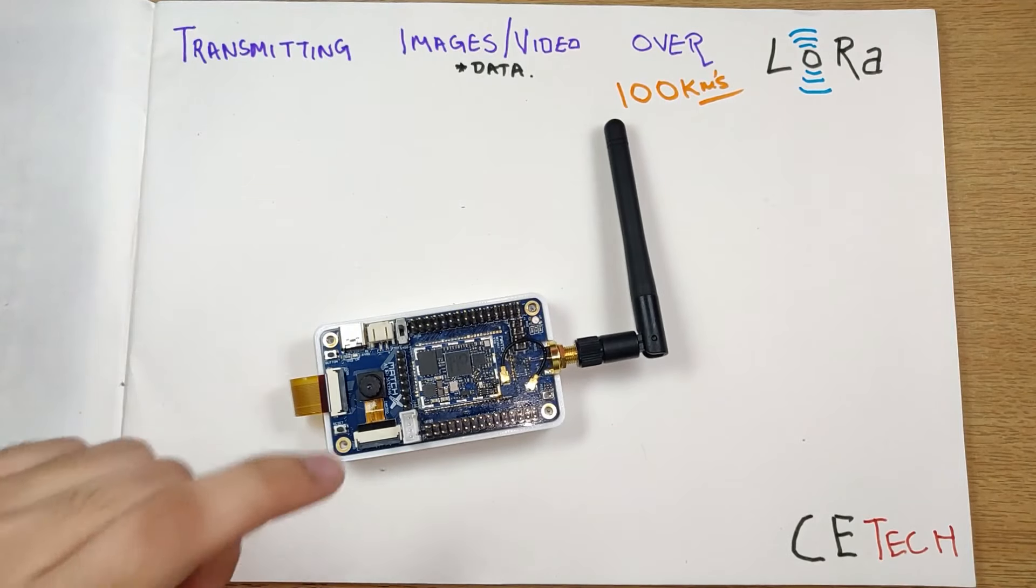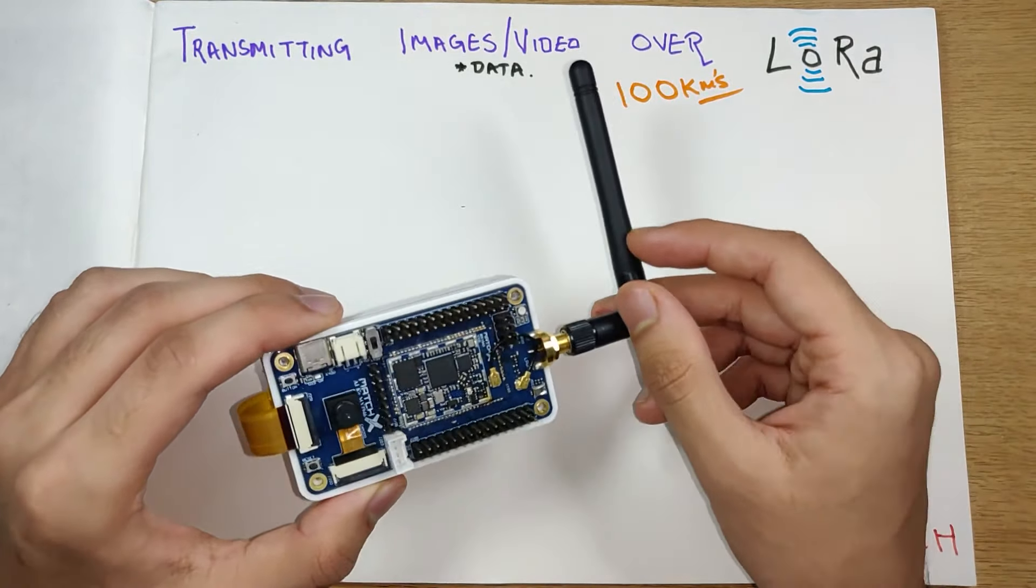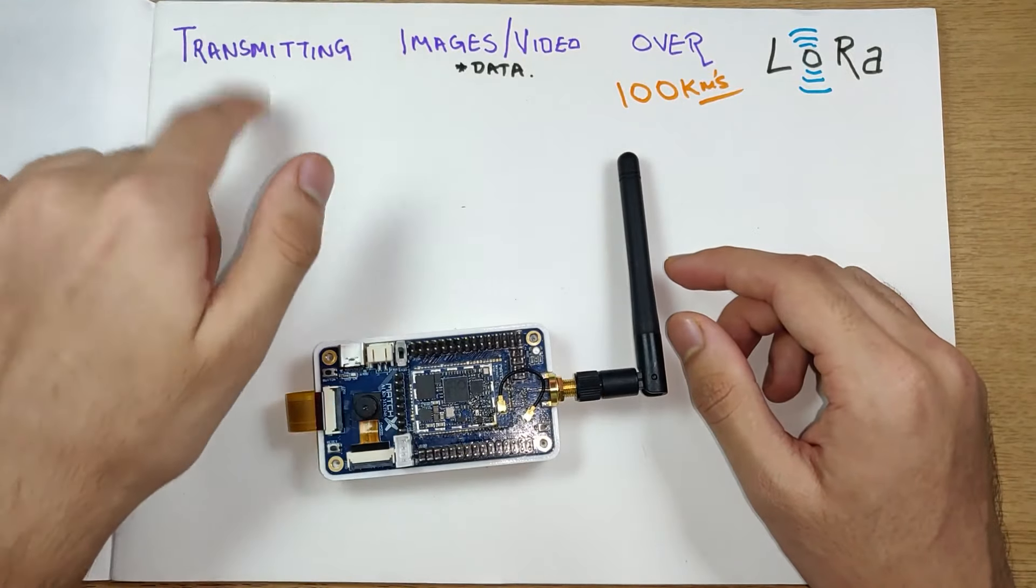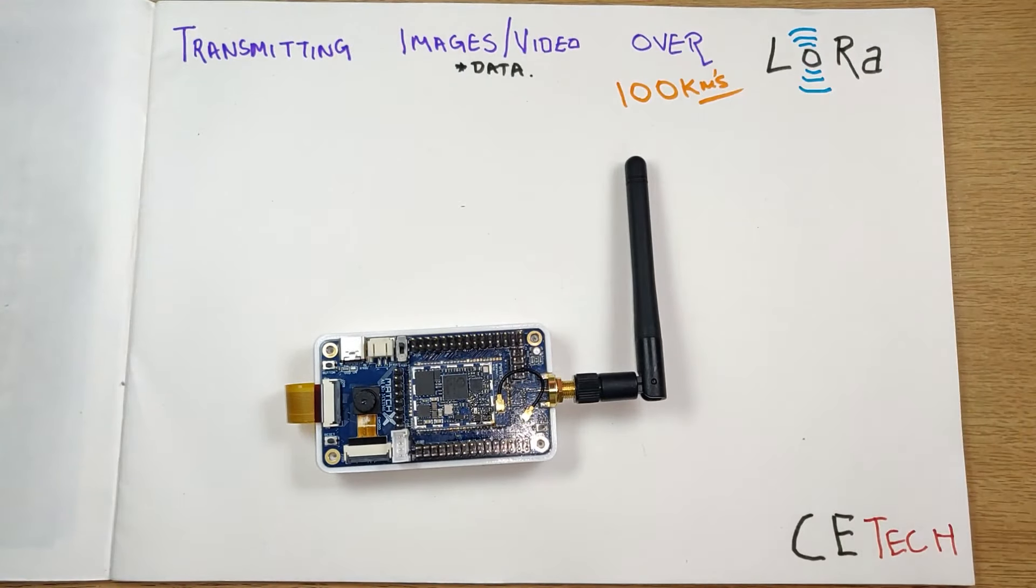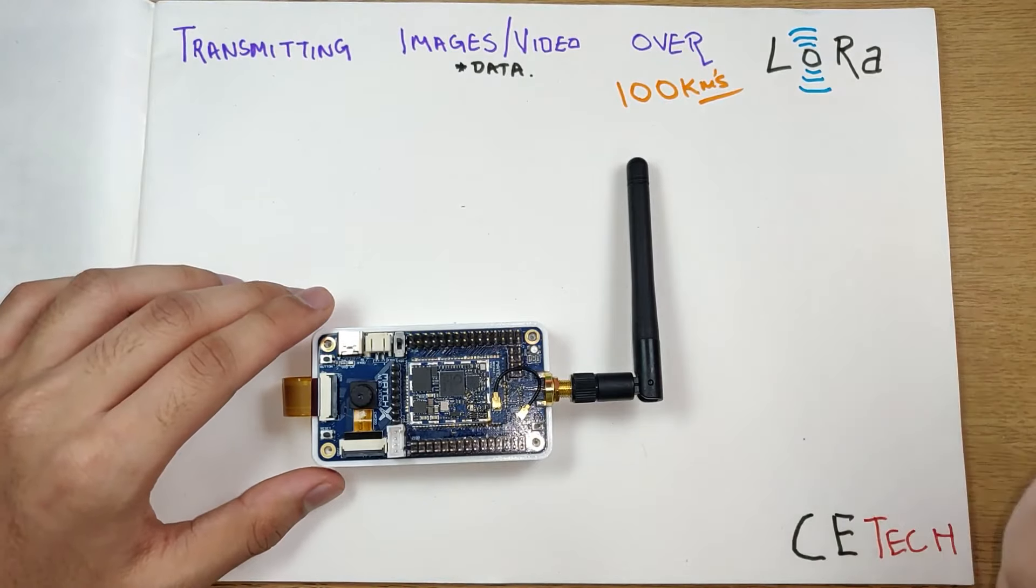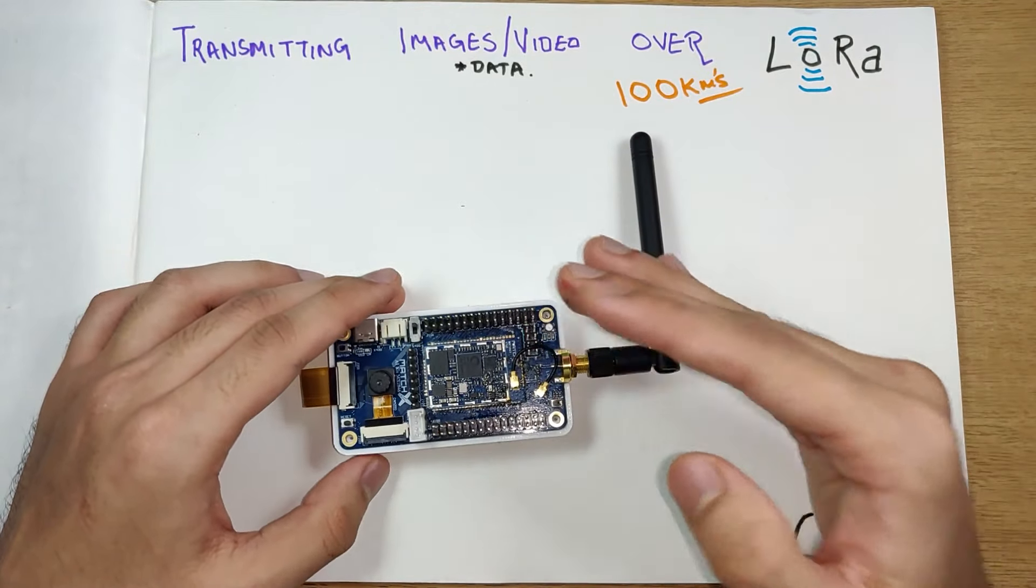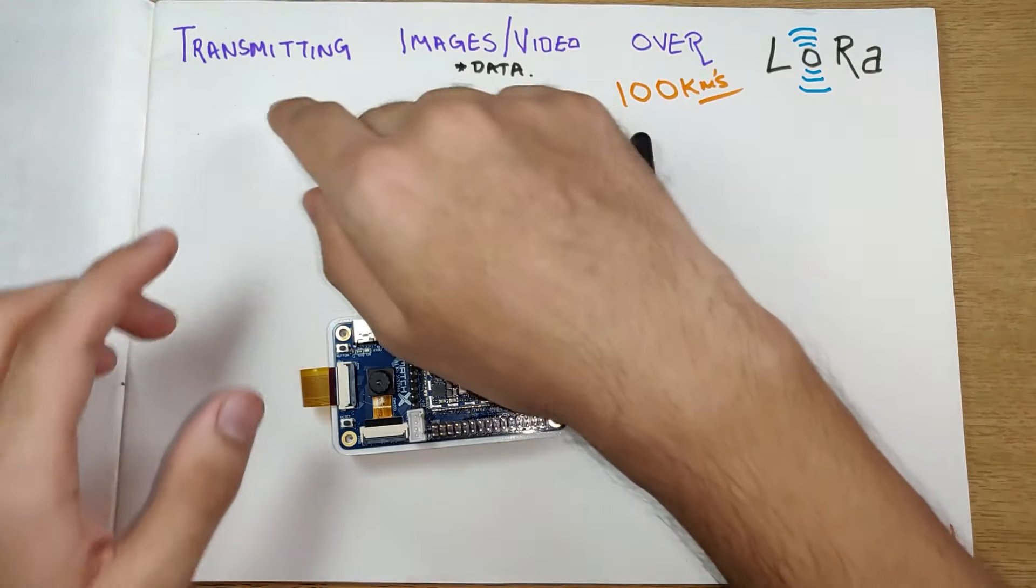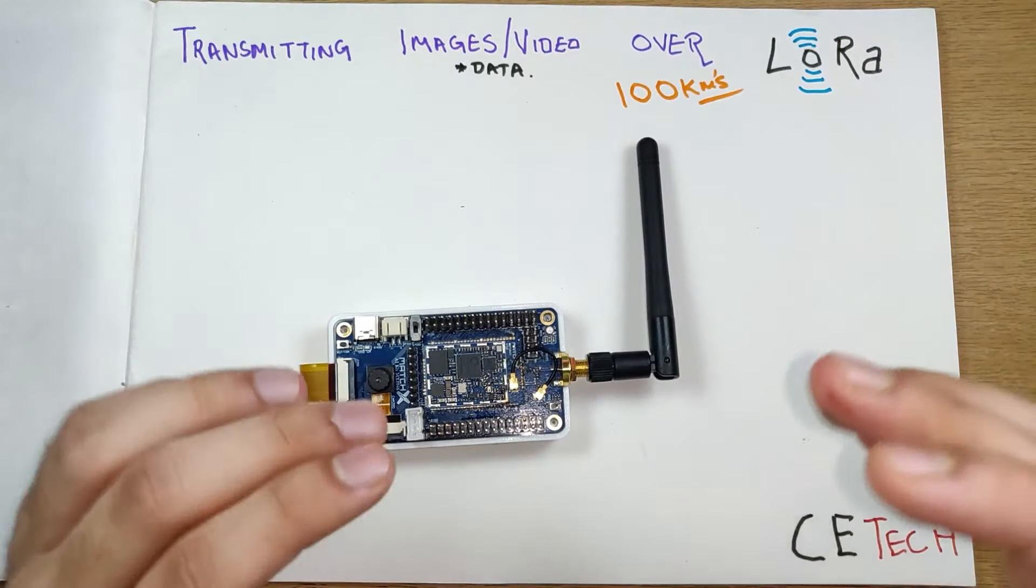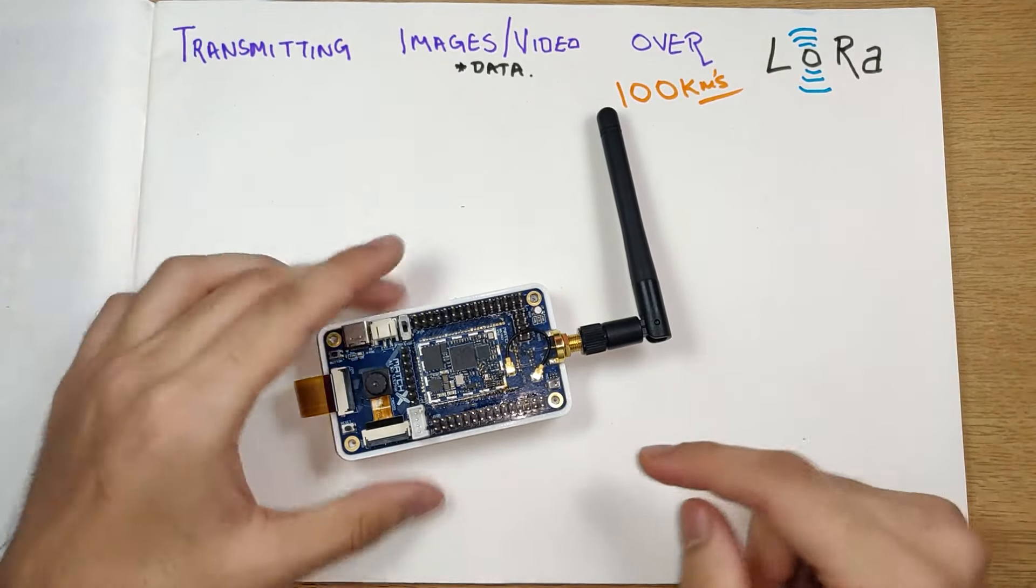The folks over at MatchX checked out my LoRa videos, were impressed by it, and sent over their brand new product which is the EdgeX. This is a very fascinating product. Using only this handheld device, you will be able to transmit image and video data over LoRa. We will not really be transmitting images and videos entirely over LoRa because Laura has that limited bandwidth, but the folks at MatchX have made this possible using ML and AI.